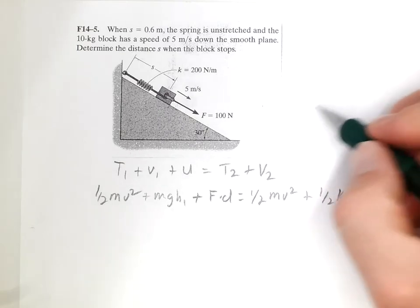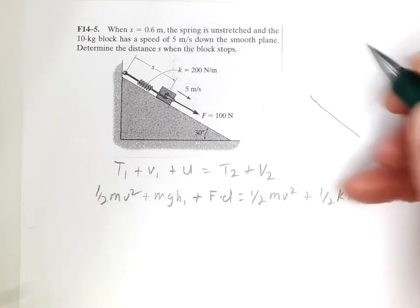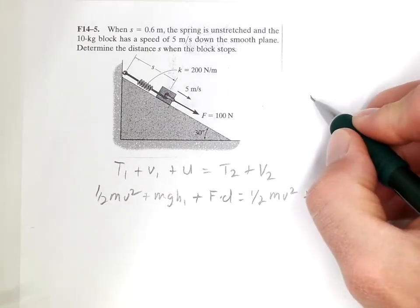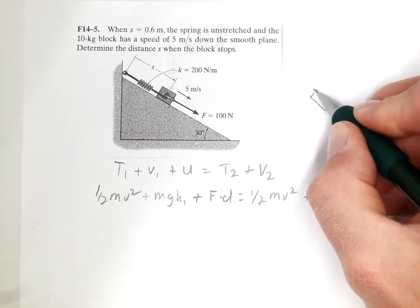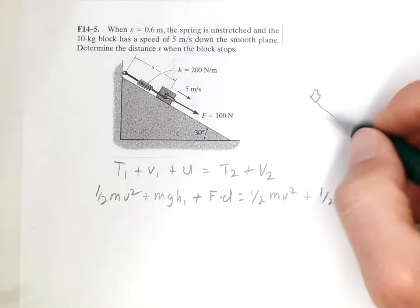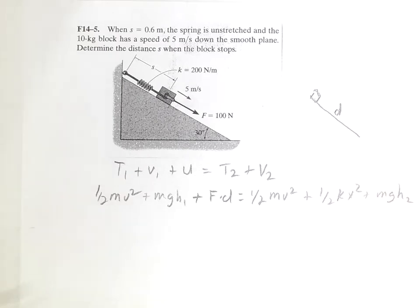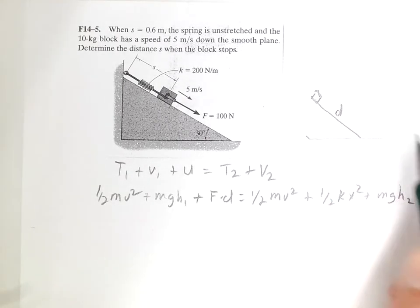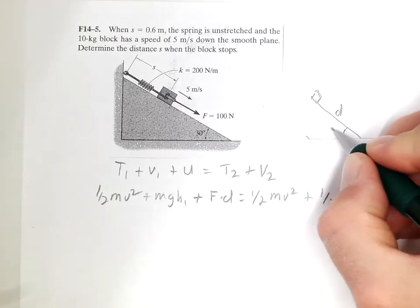Now, if we draw the incline over here, and we have our block, it's going to move a distance D along the incline, at which time it will stop at the bottom. And the slope is 30.